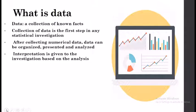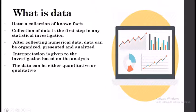The next step is to analyze the data. The purpose of analyzing data is to dig out information which is useful for decision making. Some commonly used methods for statistical analysis are the measures of central tendency, measures of dispersion, correlation, regression, etc., which we will study later. The final step is interpretation — drawing conclusions based on the analysis done earlier. Interpretation of data requires a high level of expertise and is a very difficult task.